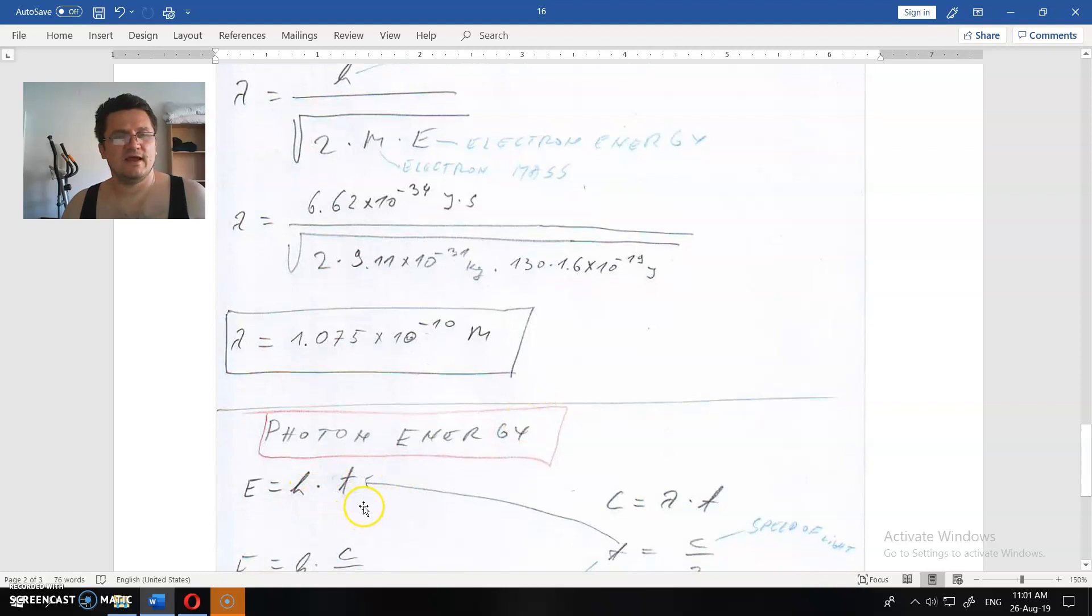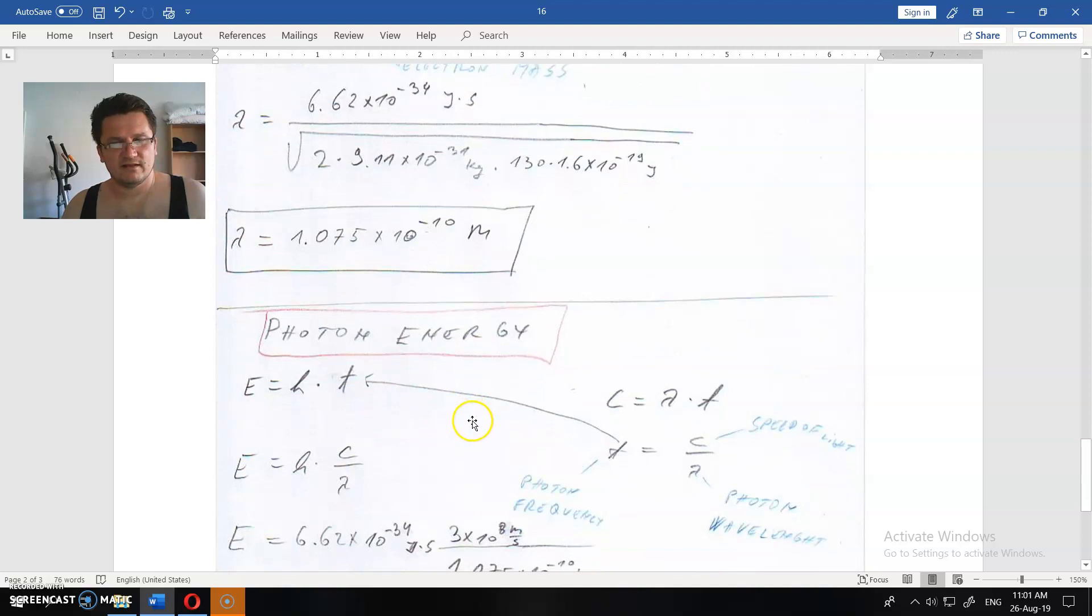Photon energy is equal, of course, to Planck constant times its frequency. But we don't have frequency here. We have a wavelength.